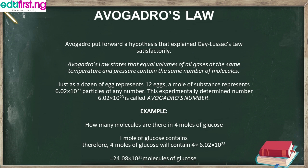Avogadro put forward a hypothesis that explained Gay-Lussac's Law satisfactorily. Avogadro's Law states that equal volumes of all gases at the same temperature and pressure contain the same number of molecules. The difference is that Avogadro uses molecules while Gay-Lussac uses volumes. Just as a dozen eggs represents 12 eggs, a mole of substance represents 6.02 × 10²³ particles of any substance.